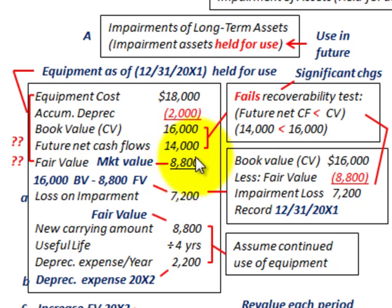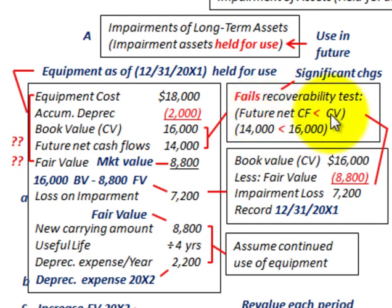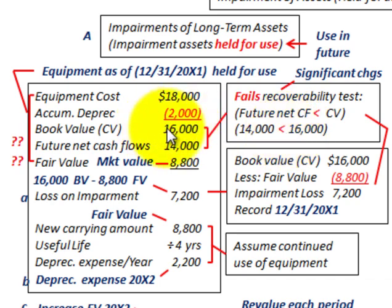Based on that, we can test for what they call the recoverability test. This is where you compare the future net cash flows — if they are less than the carrying value of the asset, you fail this test. Our future net cash flows of $14,000 are less than our carrying value of $16,000, so we've failed the recoverability test.